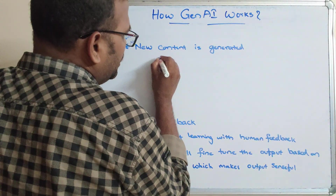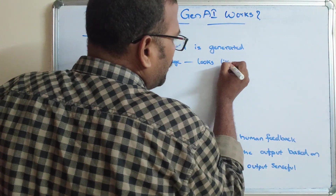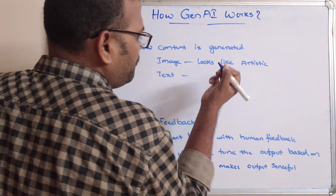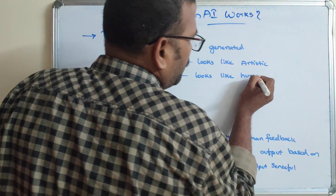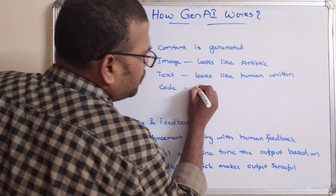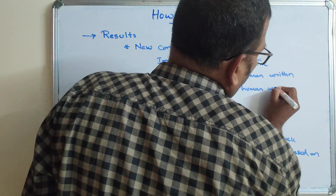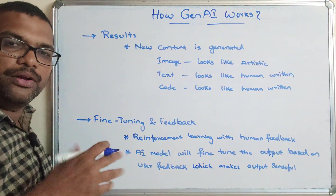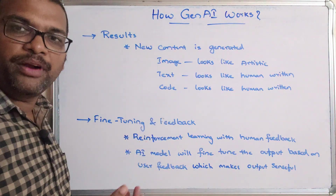The new content generated looks artistic if it is an image, and looks human-written if it is text or code. Whether it is an image, text, code, or audio, the output will be realistic and artistic — it will look just like something a human created.